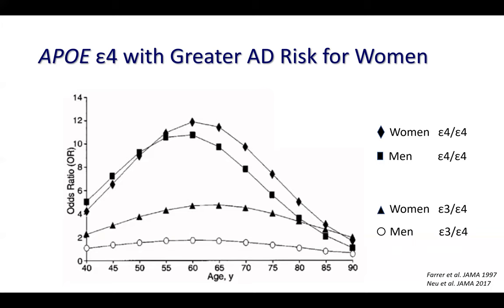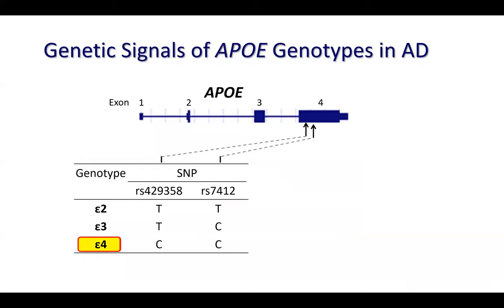Throughout the years, lots of different independent genetic studies across different ethnic groups all show very consistently that E4 is strongly associated with AD. We know people who inherit E4 have higher risk of AD.